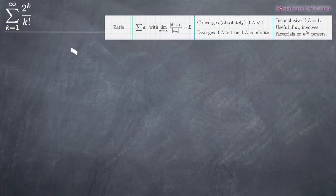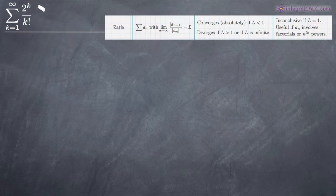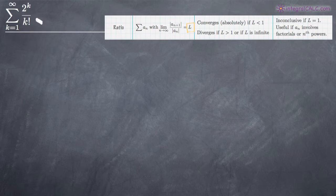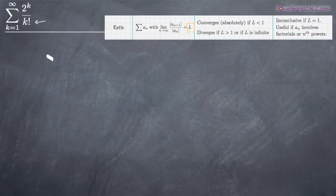We're going to be using the ratio test to figure out whether or not the series converges or diverges. With the ratio test, we're going to replace the variable k in our function with k plus 1 everywhere we see the variable, then divide that by the original function, simplify, and solve for a number. That number is called L, and it tells us whether or not this series converges or diverges. The ratio test is really useful when we have factorials, so that's always a good place to start if your function involves a factorial.